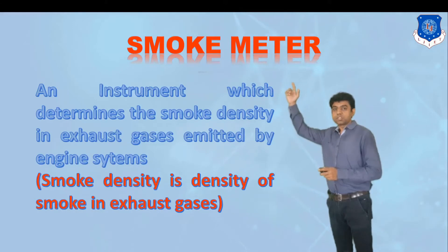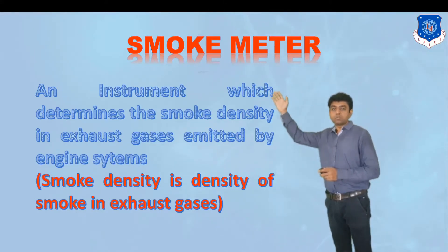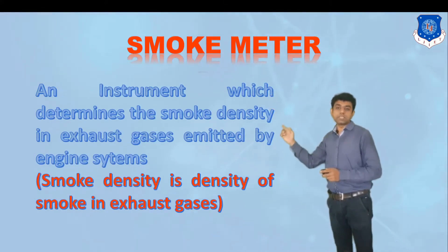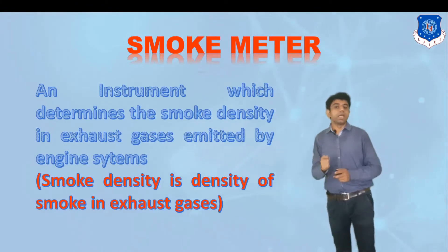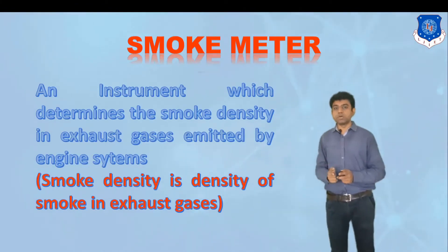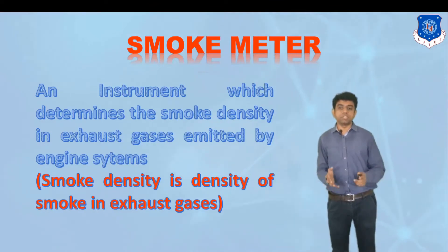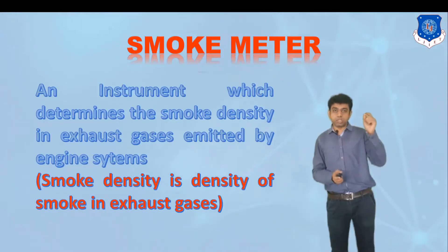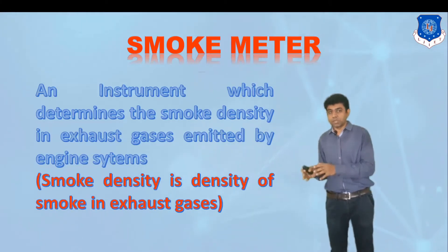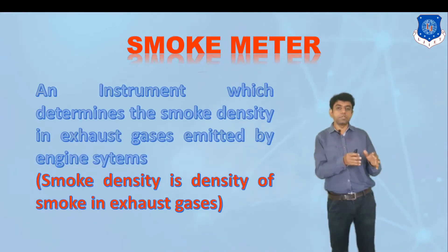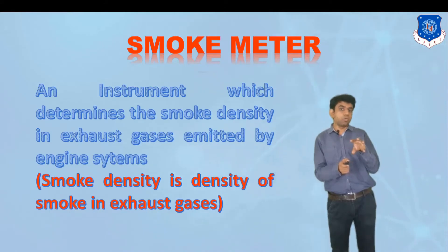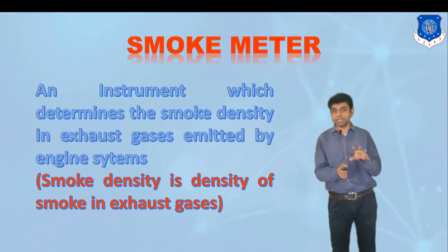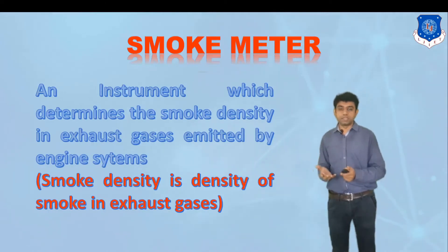For smoke density measurement we have a smoke meter. A smoke meter is an instrument which determines the smoke density in the exhaust gases emitted by the engine system. Smoke density is nothing but the density of smoke present in the exhaust gas — mass per unit volume. For example, in one cubic centimeter of exhaust gas sample, the mass of smoke present in that one cubic centimeter is the smoke density.